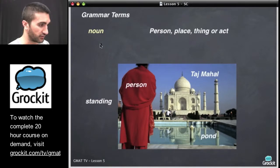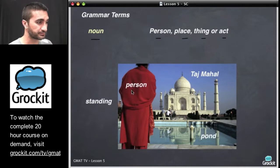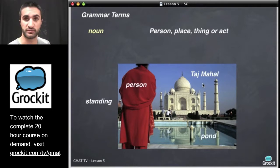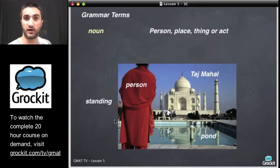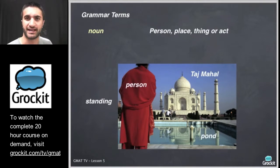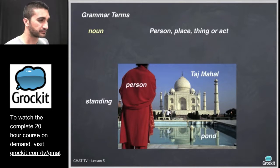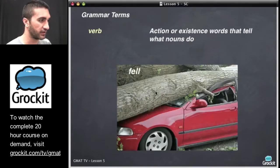Let's take a picture and look at how these work in the real world. A noun can be a person, a place, a thing, or an act. So here's a person — this man. We have the Taj Mahal, definitely a place. We have a pond, definitely a thing. In this sentence, this person loves standing. Standing is a verb acting as a noun — the verb there is to love. They love what? They love standing. So these are the ways that nouns can work in English grammar.